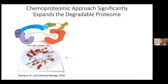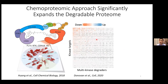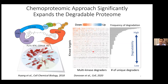Substantial work has been done to survey protein degradability using a chemoproteomic approach. Researchers from Dr. Nathaniel Gray and Eric Fisher's lab designed multi-kinase degraders that could engage multiple kinase targets. By profiling the proteome-wide response to multi-kinase degrader treatment, we can assess the frequency of degradation of these kinase targets. Based on Catherine's data, many kinase targets are frequently degraded, while a group of kinases — although engaged by at least one degrader — were never degraded, suggesting differences in degradability.